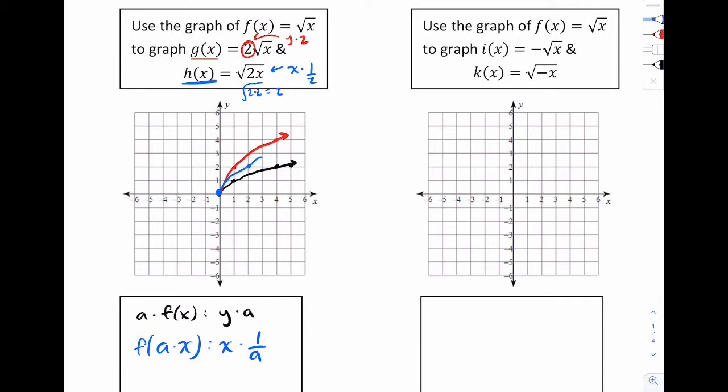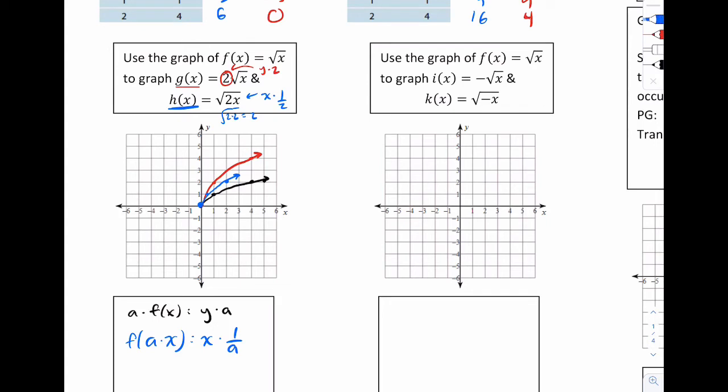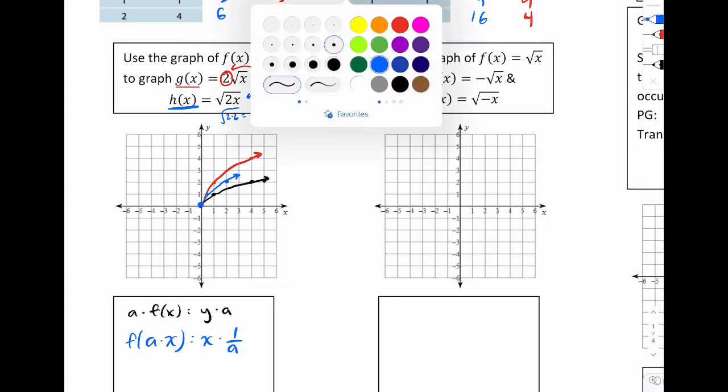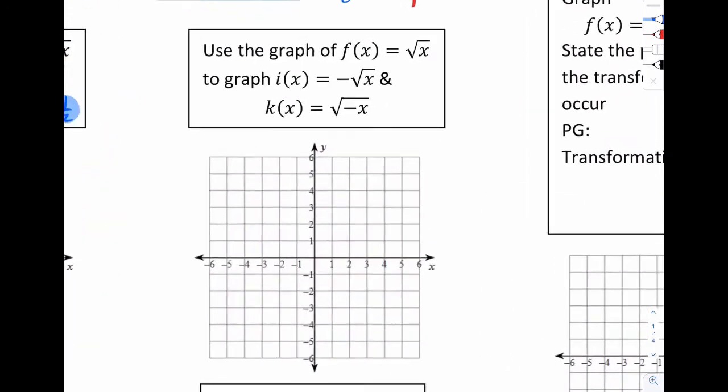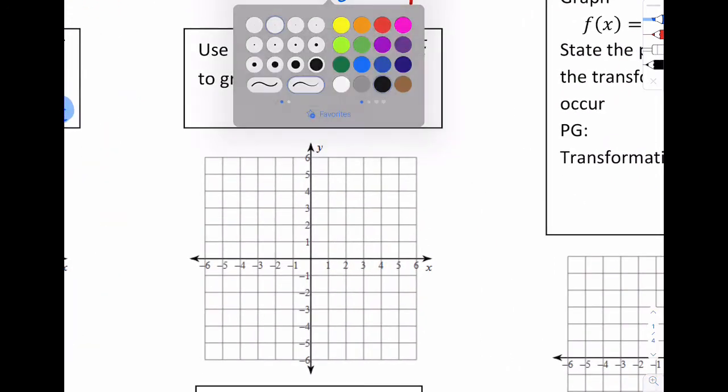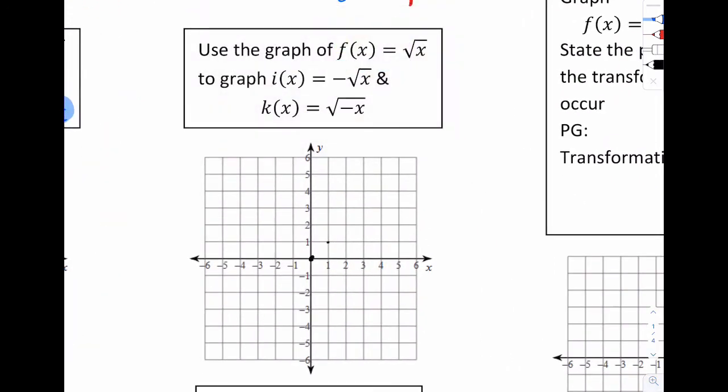So notice how the points are shrinking, that this 1, 1 became half 1. This 4, 2 became 2, 2. So our blue graph, some people say horizontal shrink. Essentially, yes, it is actually compressing by a factor of 2. But for you guys, it's going to be better to just write this. This x times 1 half. That's going to be easy to think about. And then, of course, you're going to have your y times 2 there. Okay, last part. Use the graph of root x. So once again, let's put the root x down. There's our three basic points.